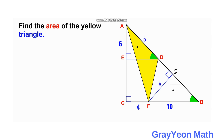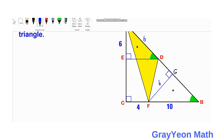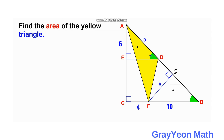For triangle ADE, with respect to the green labeled angle, we have the opposite over the hypotenuse. The hypotenuse is B, so we get 6 over B.